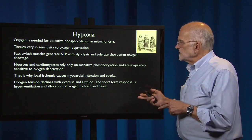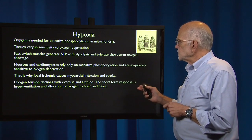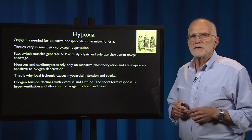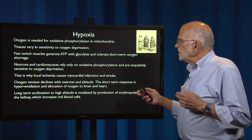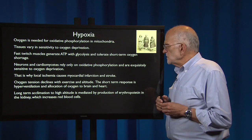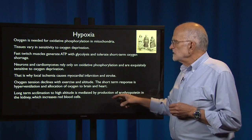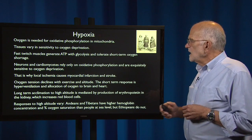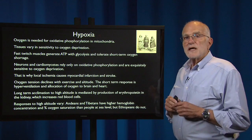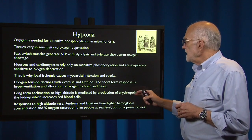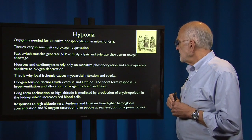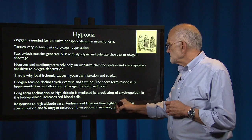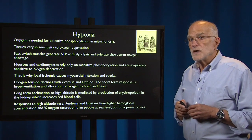Oxygen tension declines with exercise and at altitude. The short term response is hyperventilation and allocation of oxygen to brain and heart. Long term acclimation to high altitude is mediated by production of erythropoietin in the kidney, which increases red blood cells. However, responses to high altitude vary. Andeans and Tibetans have higher hemoglobin concentration and percent oxygen saturation than people at sea level, but interestingly, Ethiopians do not.